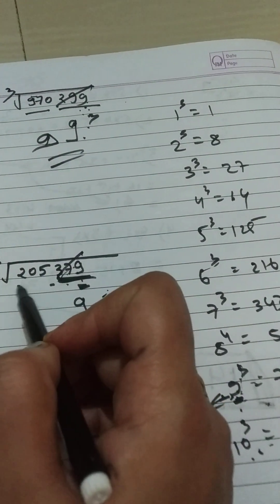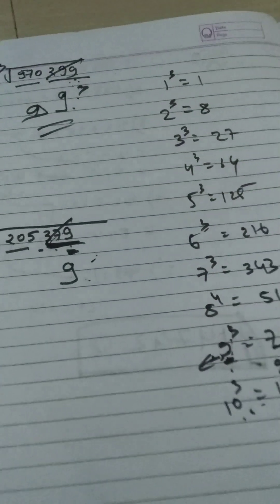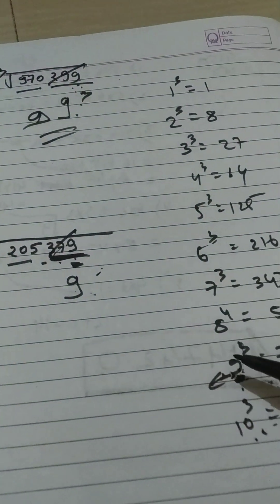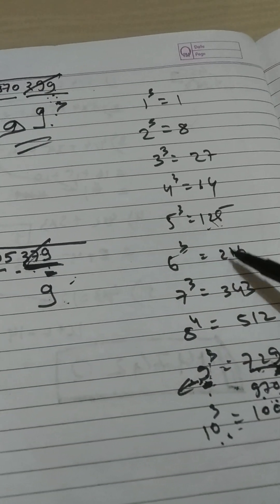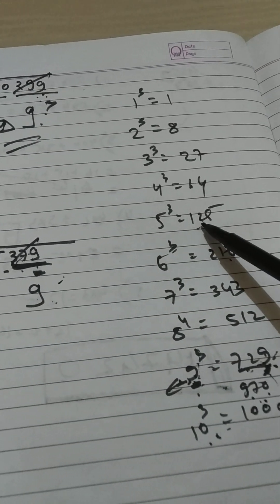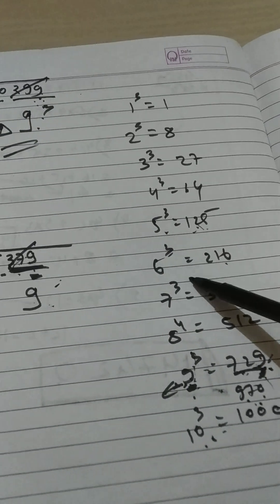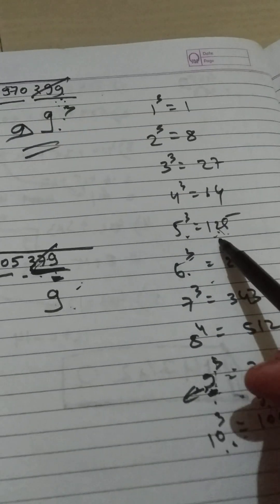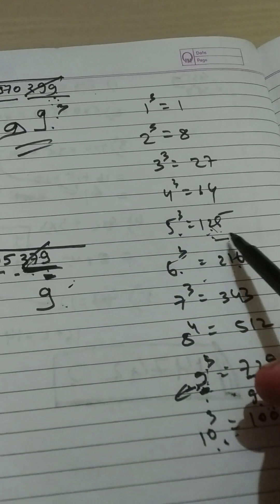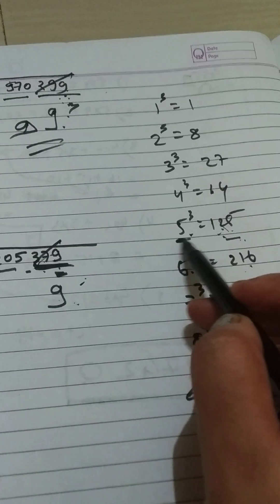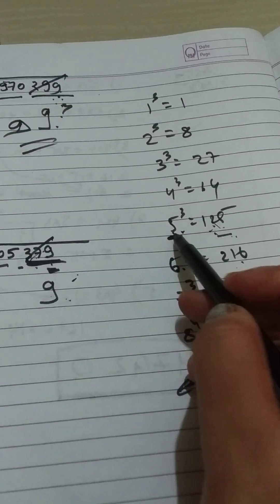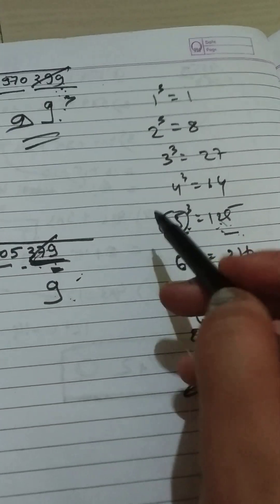Now strike this number, and remaining is 205. We have to find which numbers are near 205. So 205 will be between 125 and 216, which is 5³ is 125 and 6³ is 216. 205 is lying between these two numbers, so we will take the smallest one, that is 5. So this is 59.